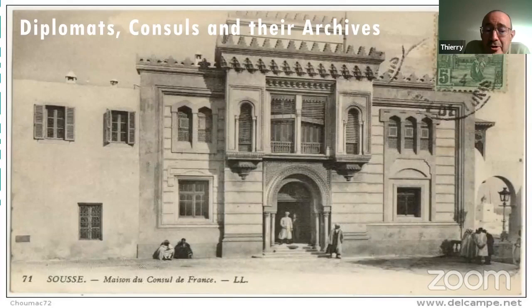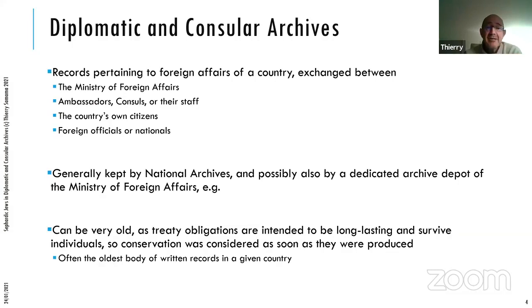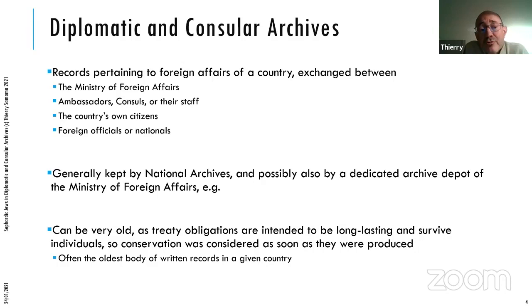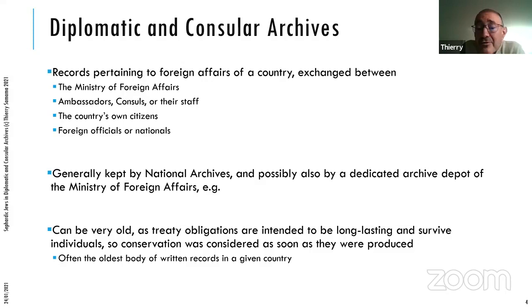First we're going to lay down a few basic definitions: who are ambassadors and consuls, how do they produce archives, and where are they stored. In a second section we're going to talk about the most useful types of records and what sort of genealogical value you can extract from those records. And then we're going to look at which archives in which countries and of which European powers have been exploited.